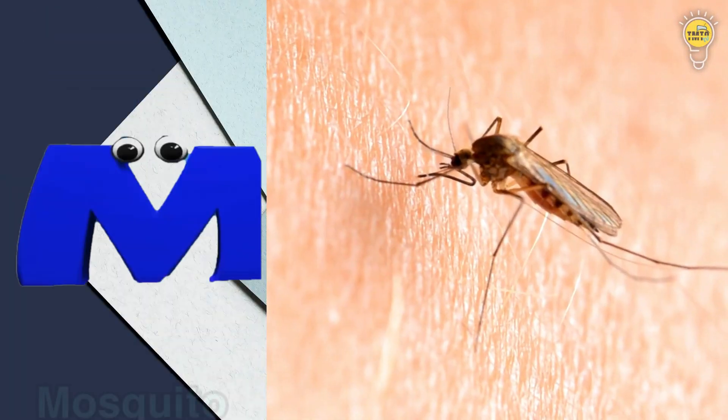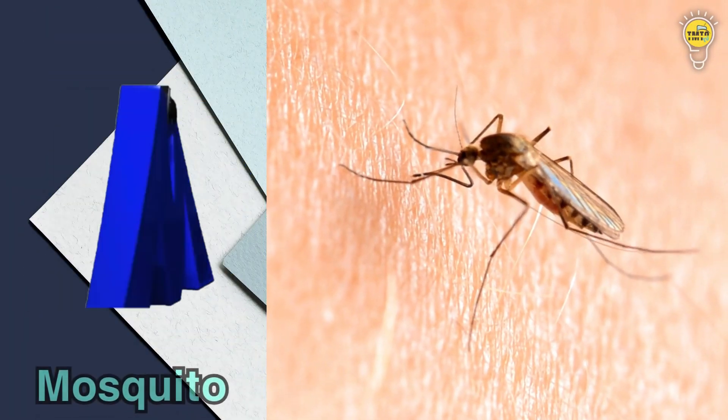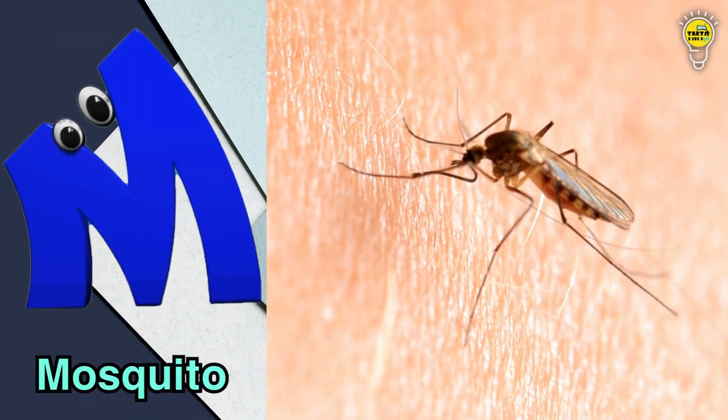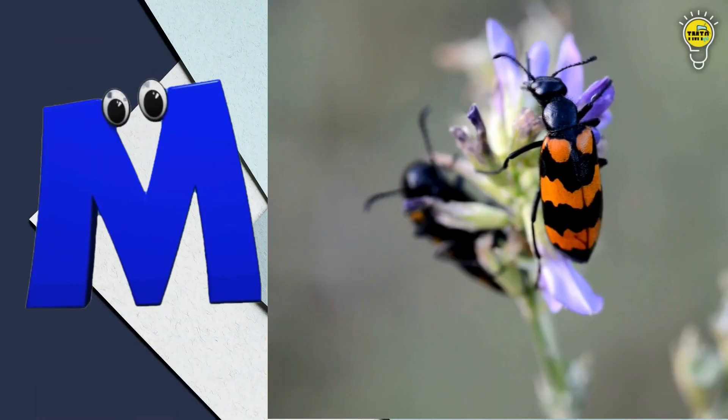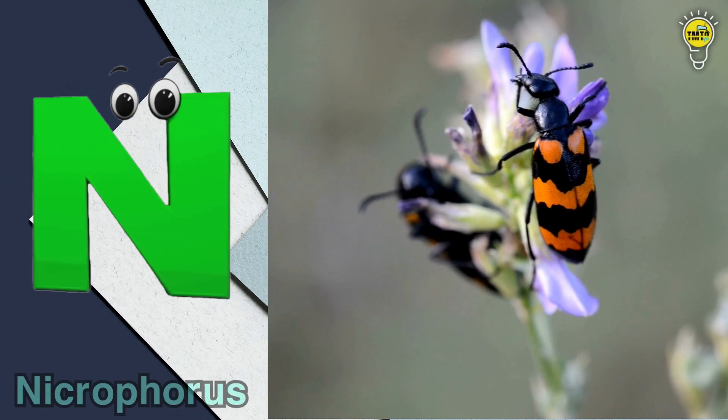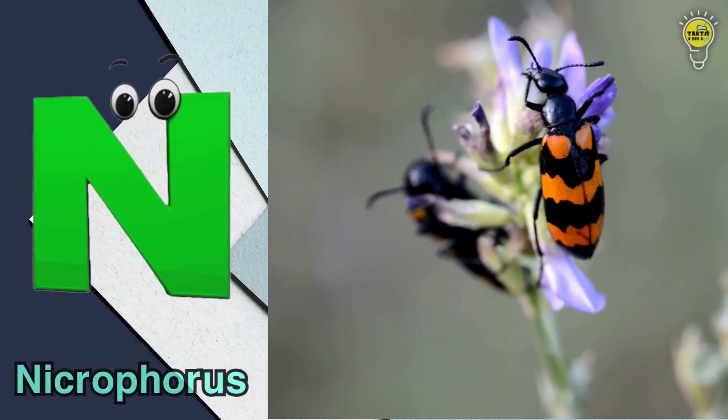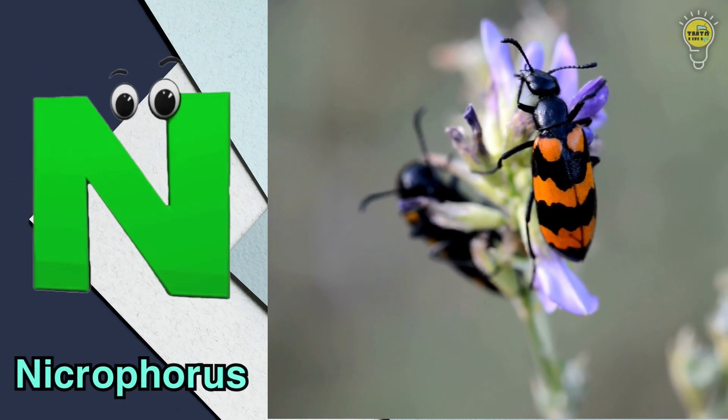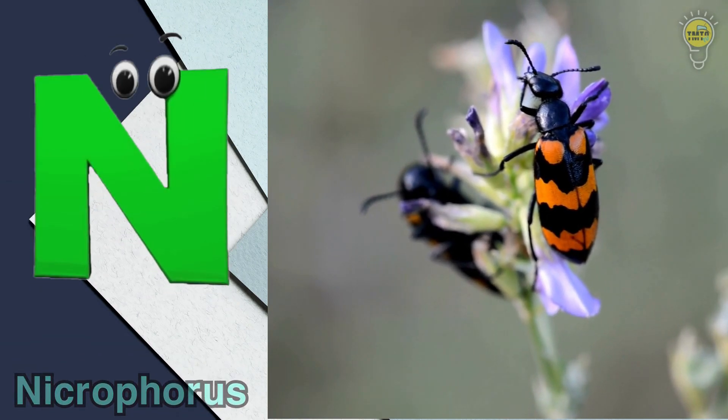M is for mosquito, m, m, mosquito. N is for necrophores, n, n, necrophores.